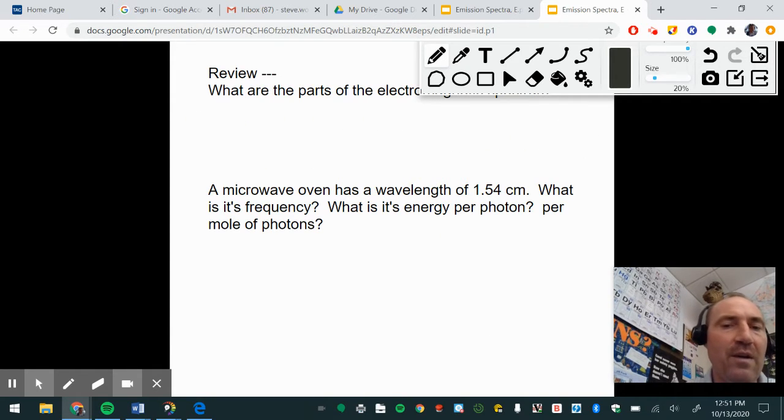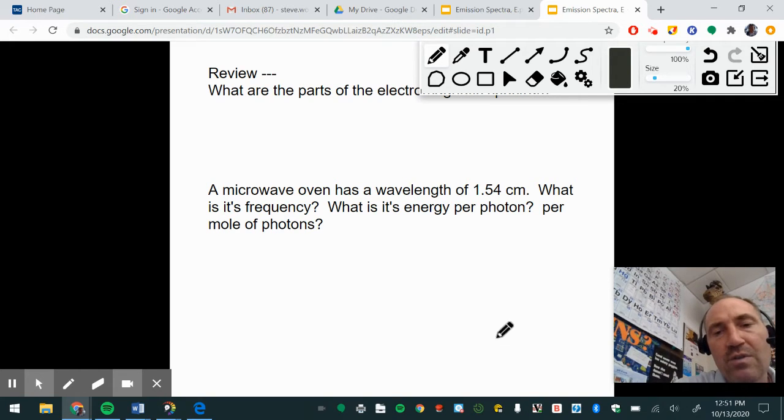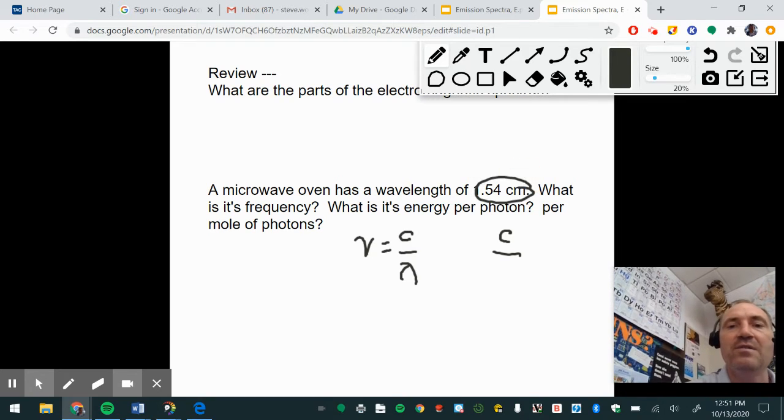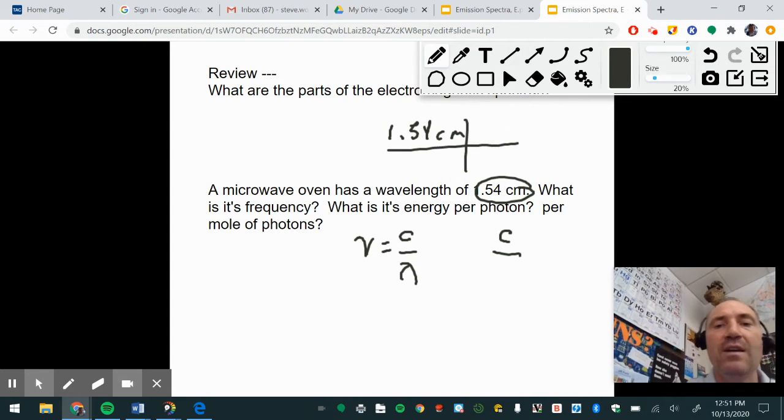For this problem it says a microwave oven has a wavelength of 1.54 centimeters. What is its frequency? So you're going to use this. Nu is equal to the speed of light divided by the wavelength. The speed of light is 2.998 times 10 to the eighth. And then the wavelength - you're going to have to get this into meters. So 1.54 centimeters to meters, you're going to divide by 100 centimeters in one meter. So you could put 0.0154 meters as your answer.